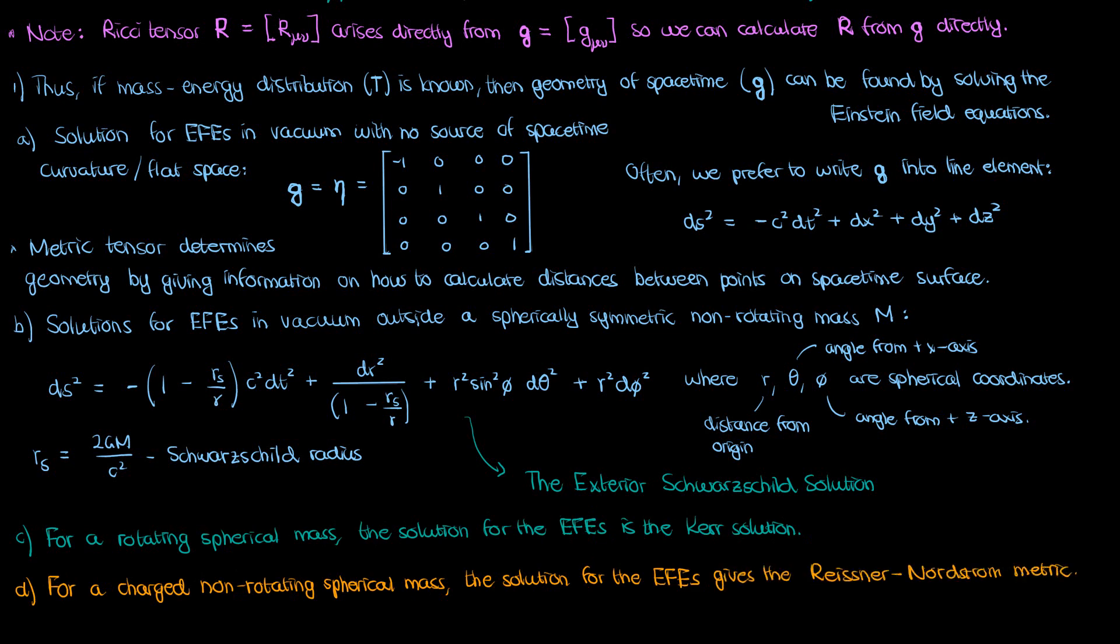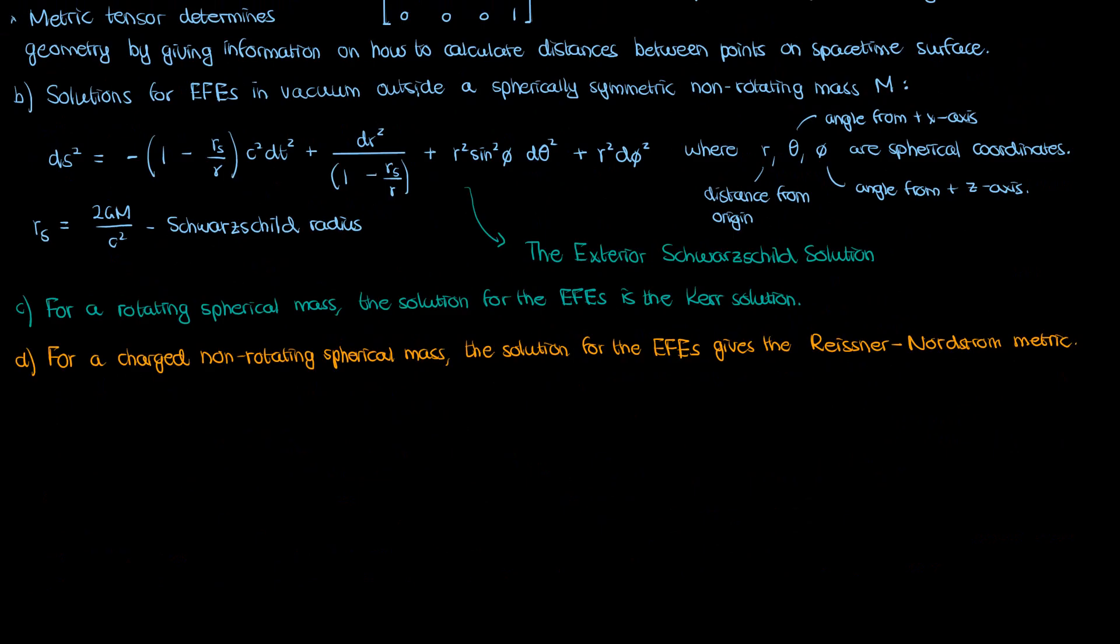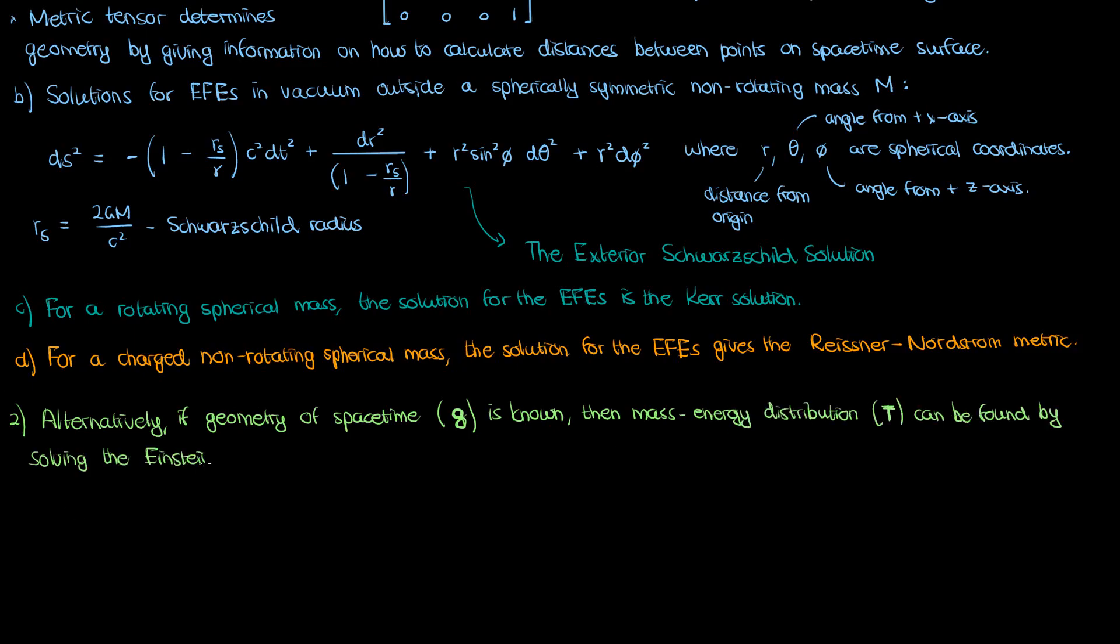Now, this is just one way to deal with the Einstein field equations, to assume a mass-energy distribution and solve for the corresponding spacetime geometry. But we can also work in reverse. We can hypothesize a spacetime geometry and then solve the Einstein field equations to get the mass-energy distribution needed to achieve that spacetime geometry. This has been done a few times for some exotic cases.